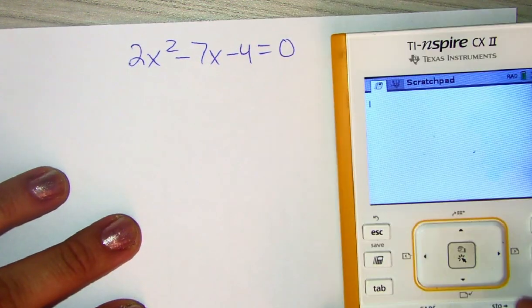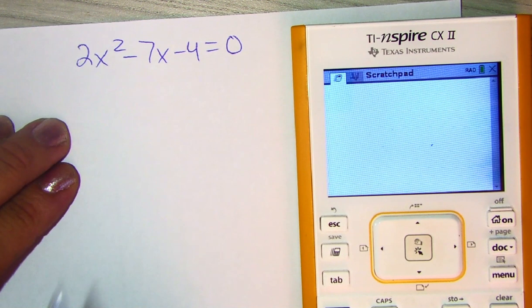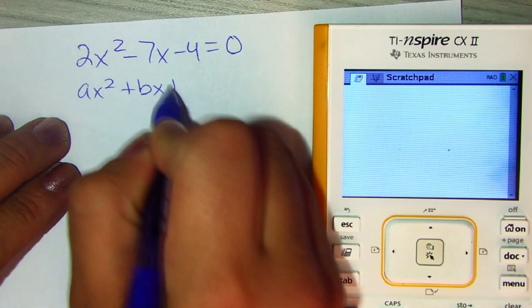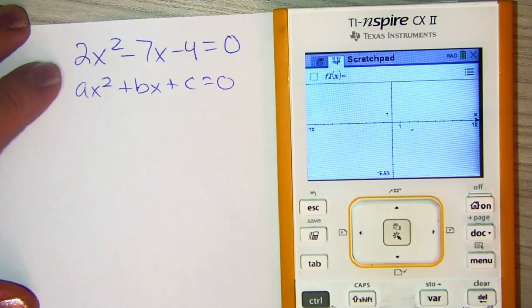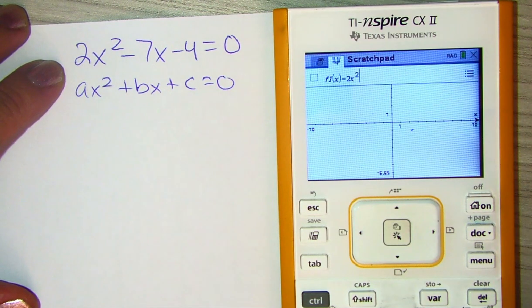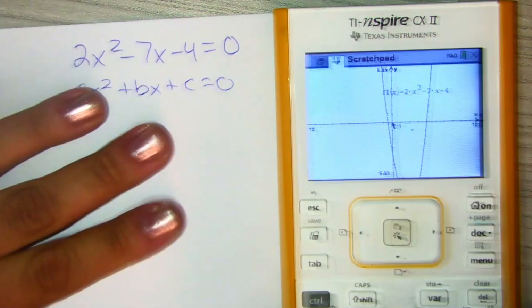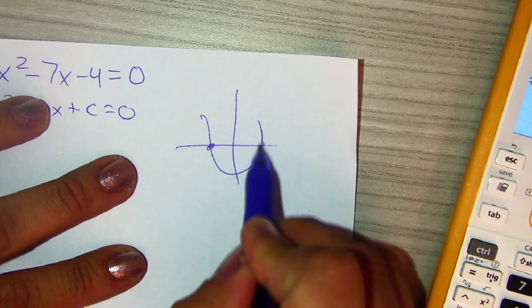Once again, we have our calculator available just for the graphing method and checking real quick if we have solutions. We have to check that it's in standard form. And it is, so we're going to go ahead and graph it, 2x squared minus 7x minus 4, and that gives you a quadratic function that is touching at two places, a negative and a positive.